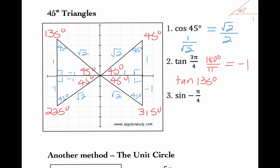And lastly, sine of negative pi over 4 — since it's negative, I know I have to move clockwise. Pi over 4 is one-fourth of a semicircle. If I converted it and did 180 over pi, I get sine of negative 45 degrees. We can use that angle, or if I wanted to add 360, I would get 315. Remember, we call those coterminal angles. The sine of this would be opposite over hypotenuse — so negative 1 over radical 2, or negative radical 2 over 2.